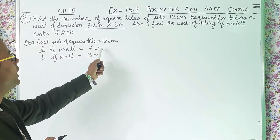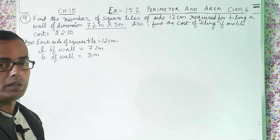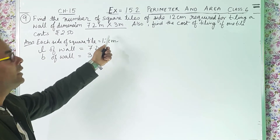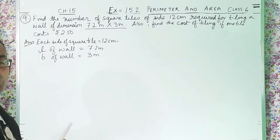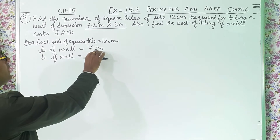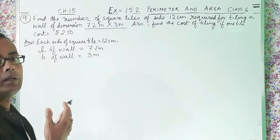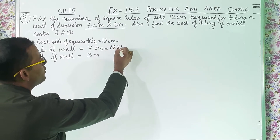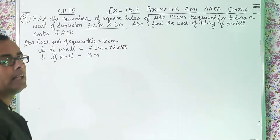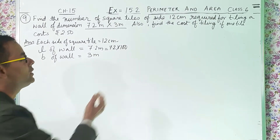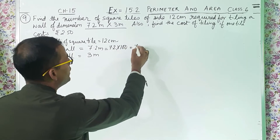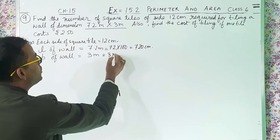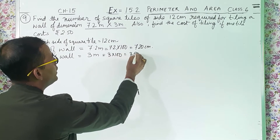To do this kind of sum we have to first make the units same. If the tile is in centimeter, we have to convert the wall dimensions into centimeter also. Or you can convert the square tile measurement into meter. But what we will do — we will convert the meter into centimeter, that will be much easier. So 7.2 into 100 gives 720 centimeter, and 3 into 100 gives 300 centimeter.